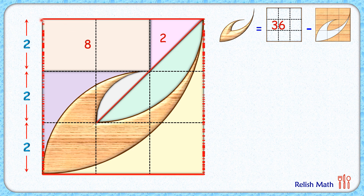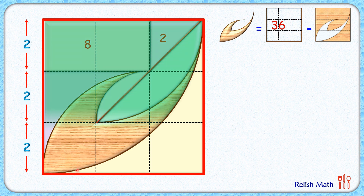We consider this full square and from it, if we subtract the area of this green quadrant, we get the area of this yellow region. The area of the full square with side length 6 is 36 centimeter square.